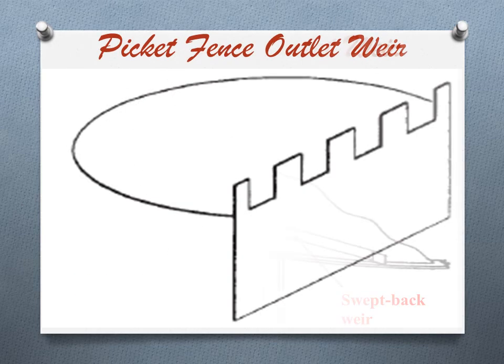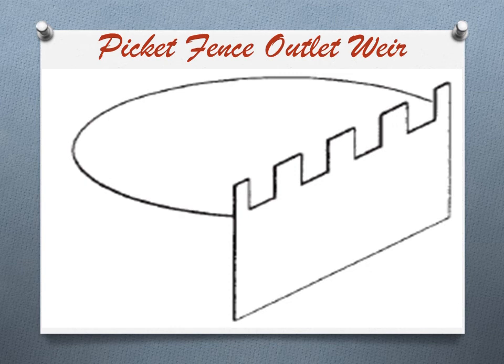Next is the picket fence weir, shown in the figure. These are used to shorten the effective length of a weir either to help balance multi-pass tray liquid flows in center and off-center weirs, or to raise tray liquid load and prevent drying in low liquid load services. To be effective, the pickets need to be tall, typically around 300 to 400 mm above the top of the weir.